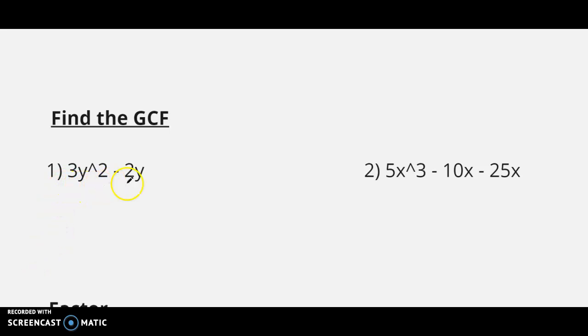Here we have 3y squared minus 2y. The only thing in common with both of these terms is a y. So after factoring out a y, we're left with 3y minus 2.